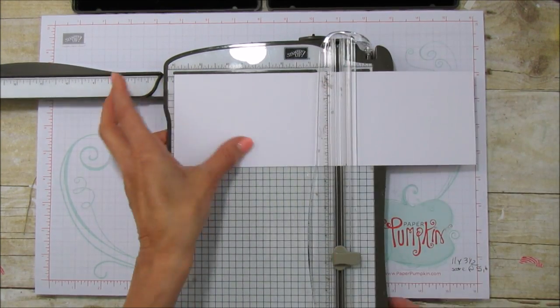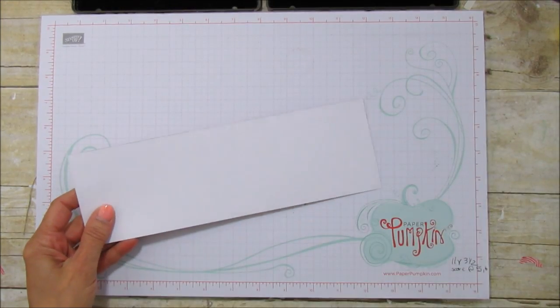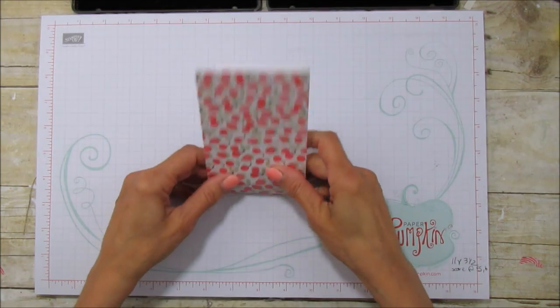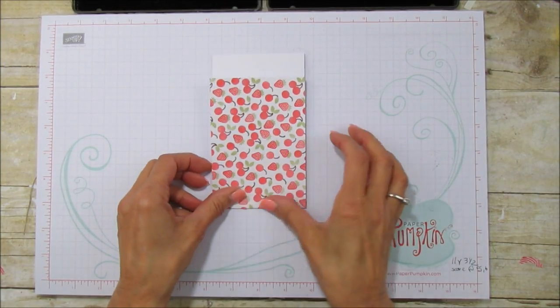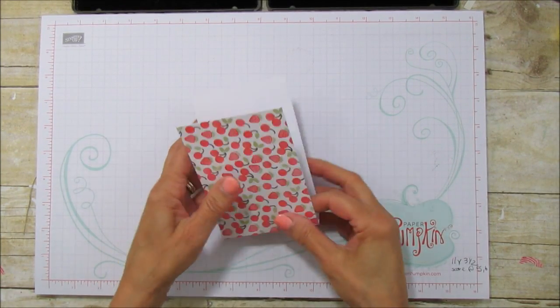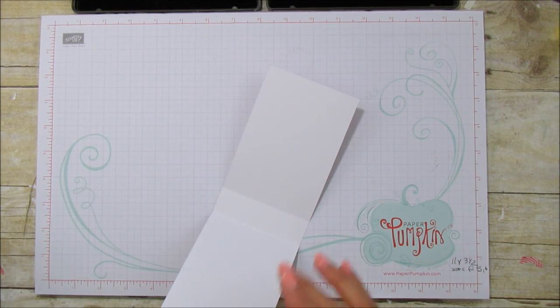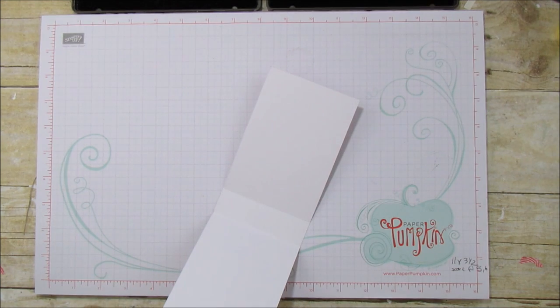These are really quick and easy. And then we're just going to fold on our score marks and what I'm using, what I put inside here, you could put anything like I found this hot cocoa mix that would fit in there and there's a few other things that I found that would fit in there.